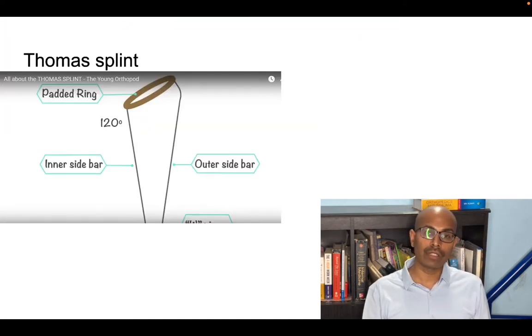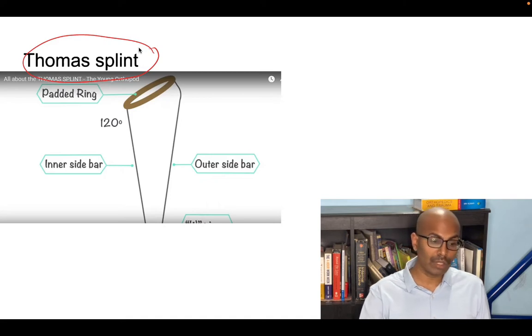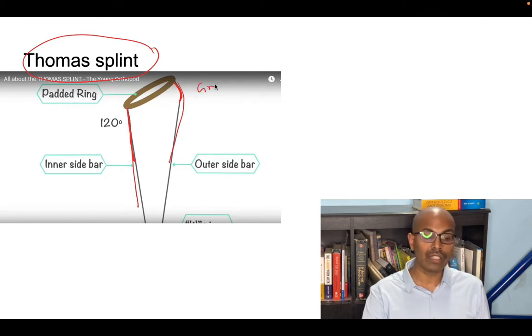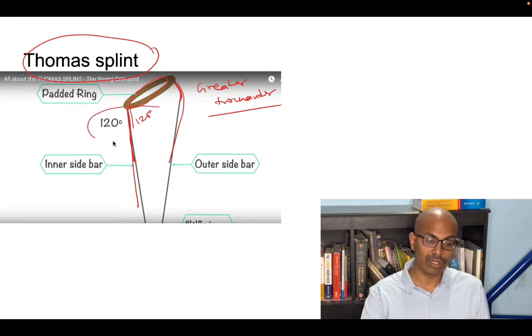Let's begin with lower limb splints. The most important splint which has been asked very frequently in your exams is the Thomas splint. Thomas splint is initially used for tuberculosis of the knee and hip joints. Now currently it is most commonly used for femoral shaft fractures for emergency splinting and it has two rods - one inner rod and one outer rod. The inner rod is straight and that is how you recognize the inner rod. The outer bar has a projection to accommodate the greater trochanter on the lateral aspect of the thigh. The angle that this inner rod forms with the padded ring is about 120 degrees. All these questions have been asked before.